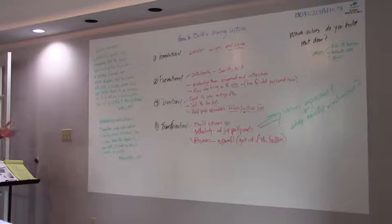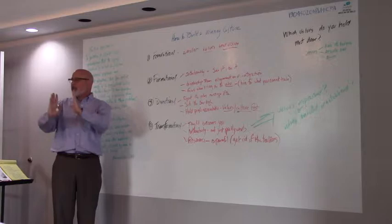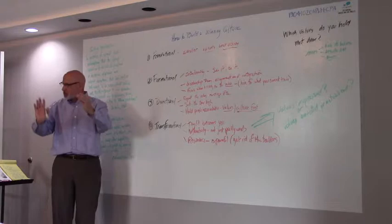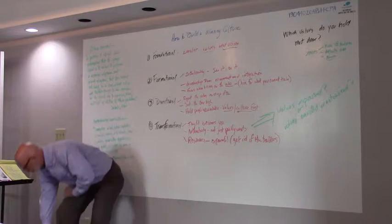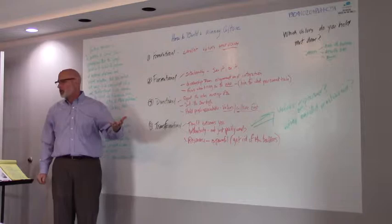The four parts are simply this: there's a foundational component to culture, we have to get that there's a basis. Then we start forming the culture, building the walls up. Now we start choosing directions, the processes we're going to implement and expectations we're going to make. If we really do it right, we can get to this point where it's transformational.